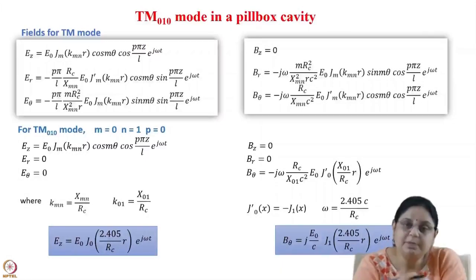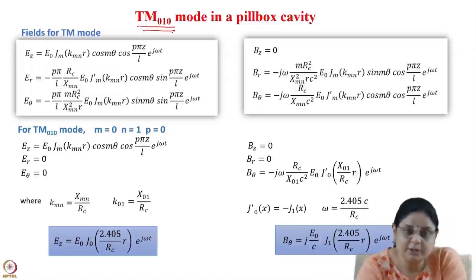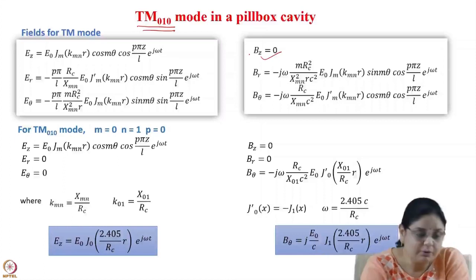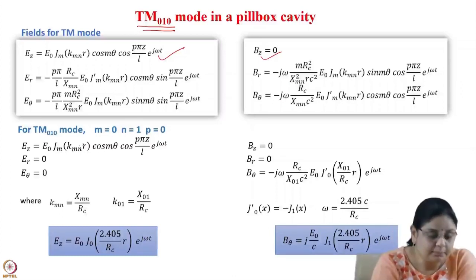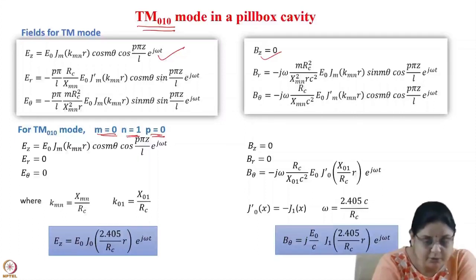Now let us take the simplest mode in the cavity, which is the TM010 mode. It is the fundamental mode in a pillbox cavity. For the TM mode, these are the fields. Bz is equal to 0 and Ez has this value, and from Ez you can calculate the values of Er, E_theta, Br, and B_theta. For the TM010 mode, M is equal to 0, N is equal to 1, and P is equal to 0. We put M equal to 0 and P equal to 0 everywhere.